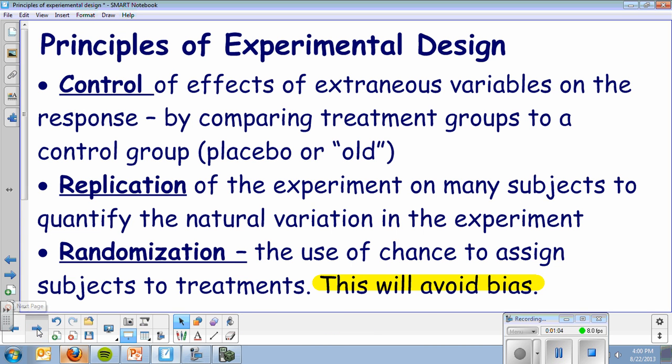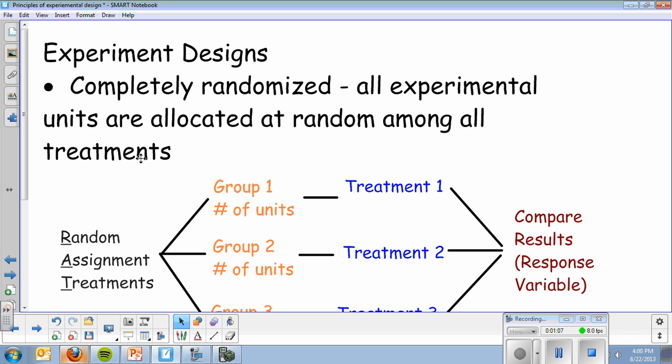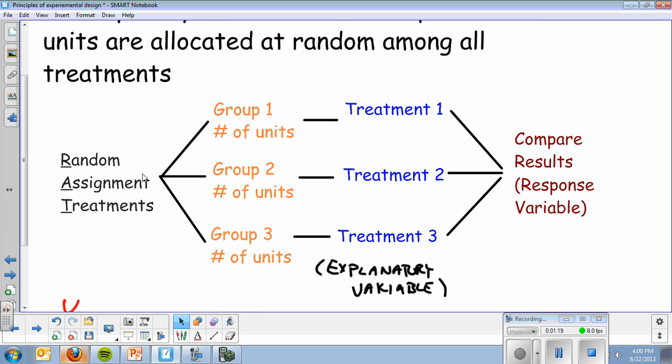So here is a skeleton of what a completely randomized design should look like. You have this copied down in your notes if you need to pause it again. But I'm going to show you an example with actual units and treatments instead of just generic. It's what I call a flowchart. This is completely acceptable on your AP exam and tests. First thing you're going to start off with is your random assignment of treatments.